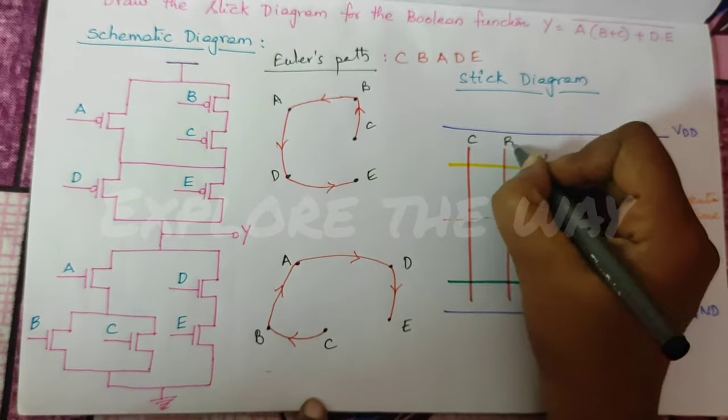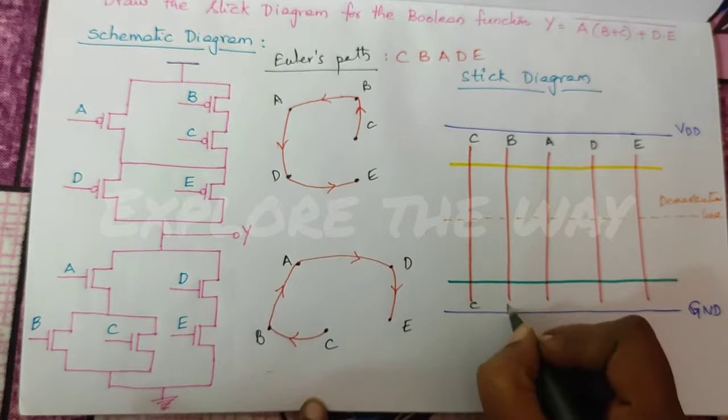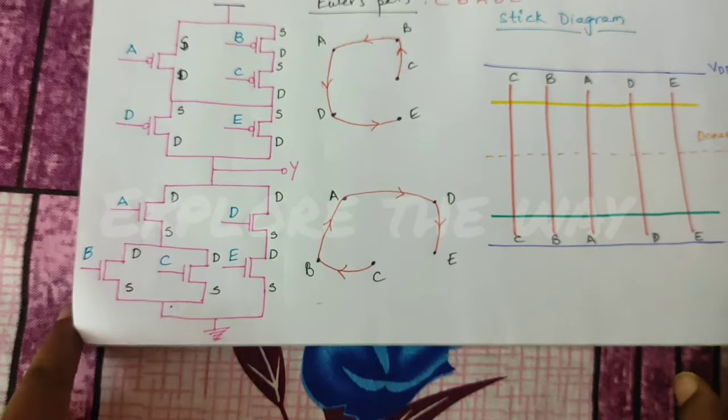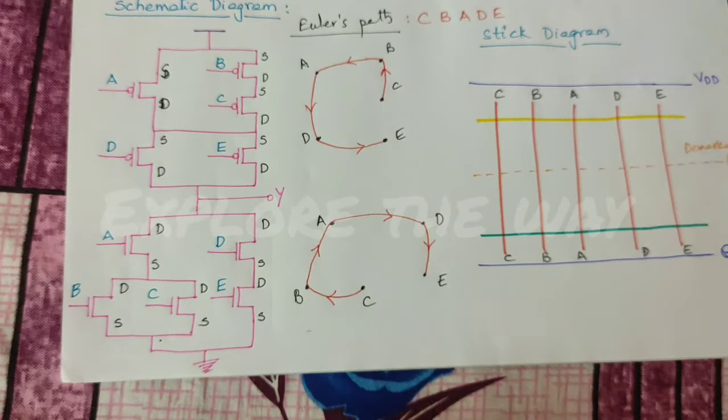C, B, A, D, E. C, B, A, D, E. Now, label the sources and drains in the same order.